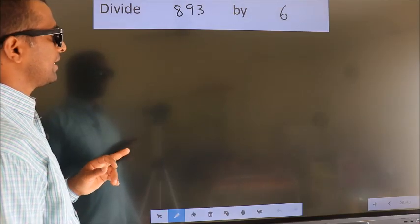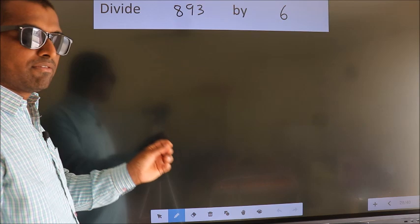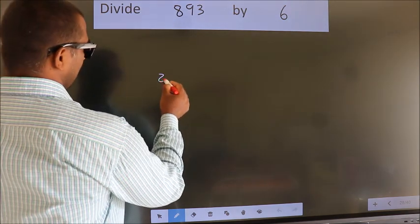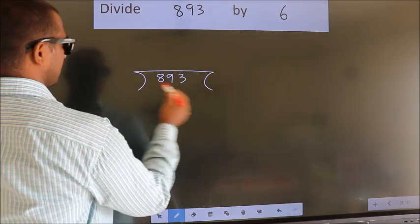Divide 893 by 6. To do this division, we should frame it in this way. 893 here, 6 here.